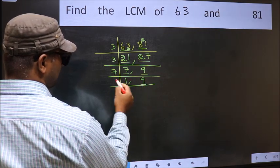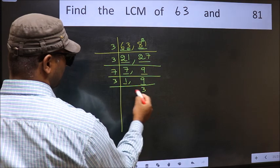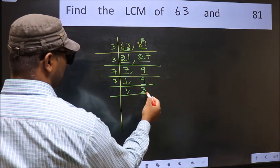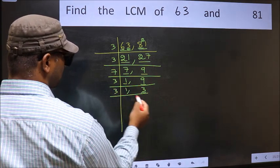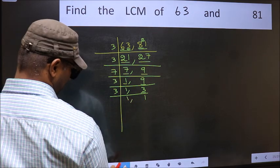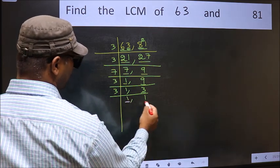9 is 3 times 3. Now here we have 3, 3 is a prime number so 3 times 1 is 3. So we got 1 in both the places.